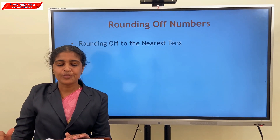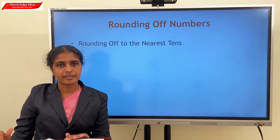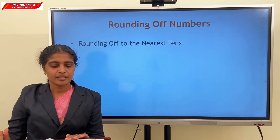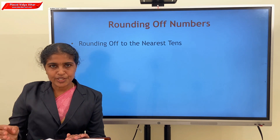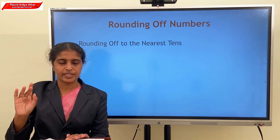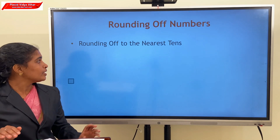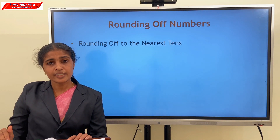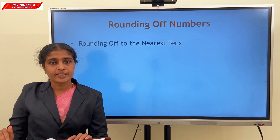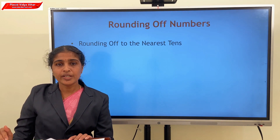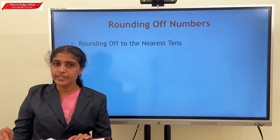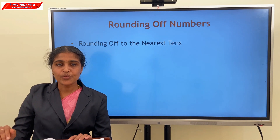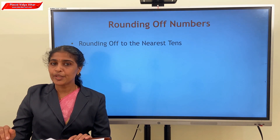Our next topic is rounding of numbers. Rounding is an approximation. Last year we studied rounding to the nearest tens; now we are studying rounding to nearest tens, hundreds, and thousands. For rounding to nearest tens, we consider the digit in the ones place. If the ones digit is less than 5, we round off to the earlier lower multiple of 10. If the ones digit is 5 or more, we round off to the next higher multiple of 10.